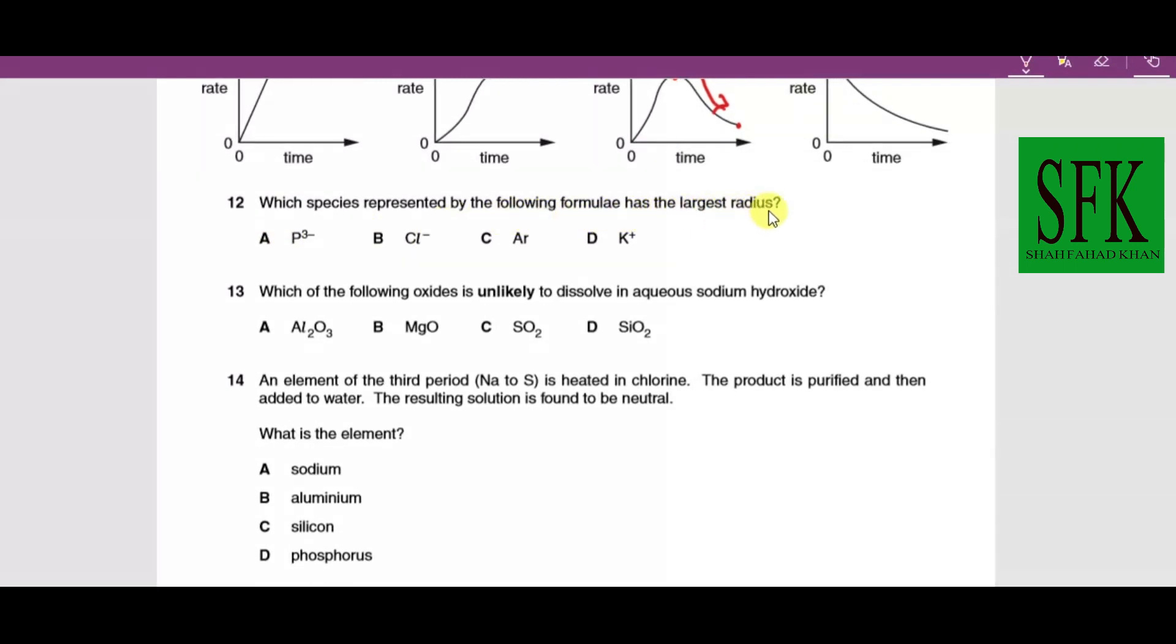MCQ number 12: which species has the largest radius? To check the radius, first we need to check its placement in the periodic table. Phosphorus, chlorine, and argon are in period three. Potassium is in period four but all the way to the left. The trend of radii is that it increases down the group and decreases across the period.